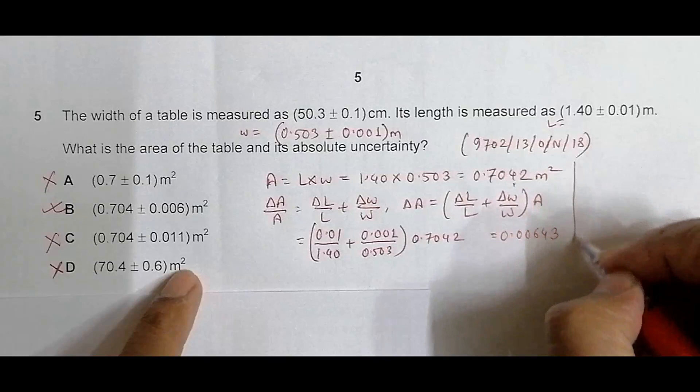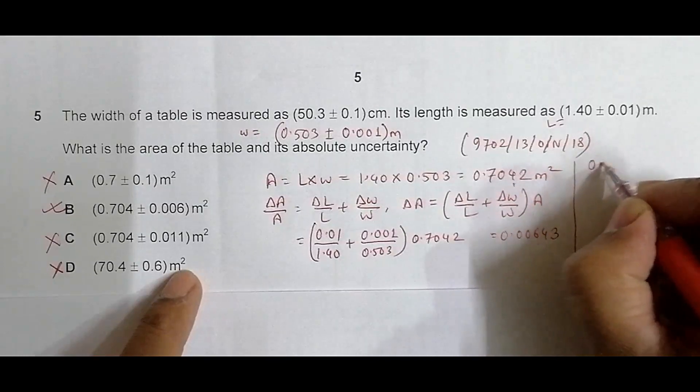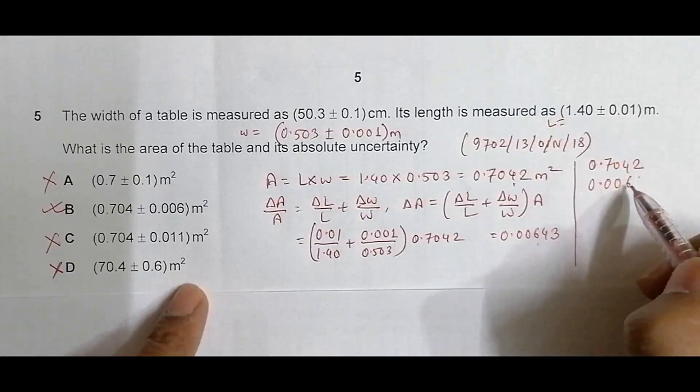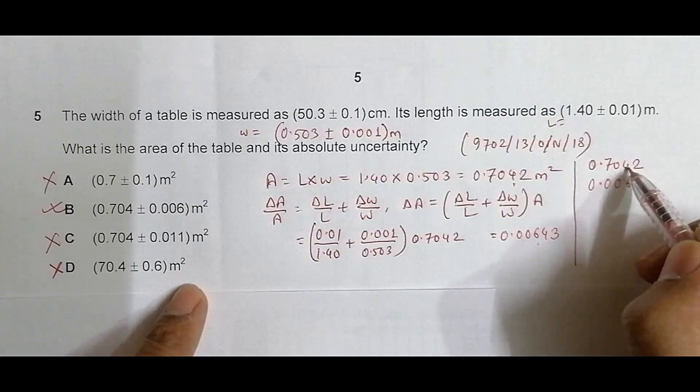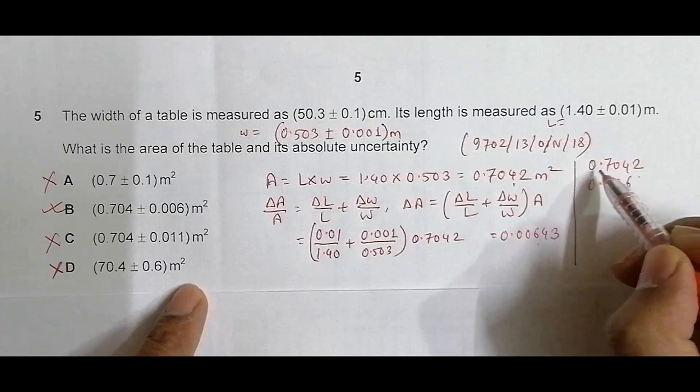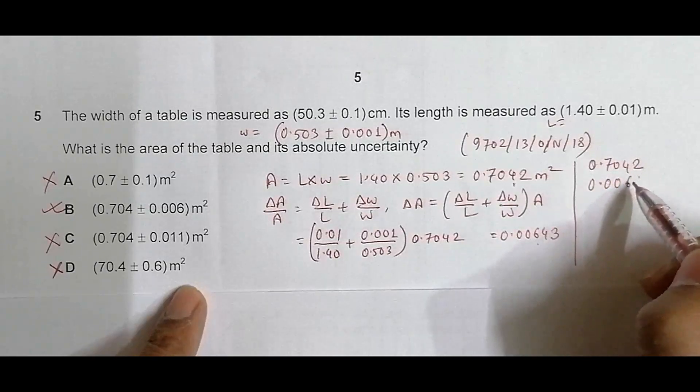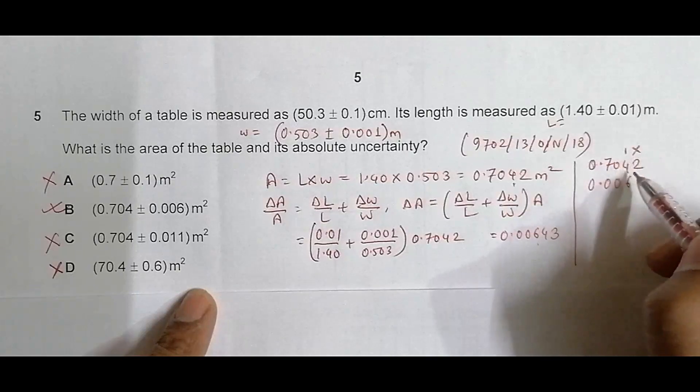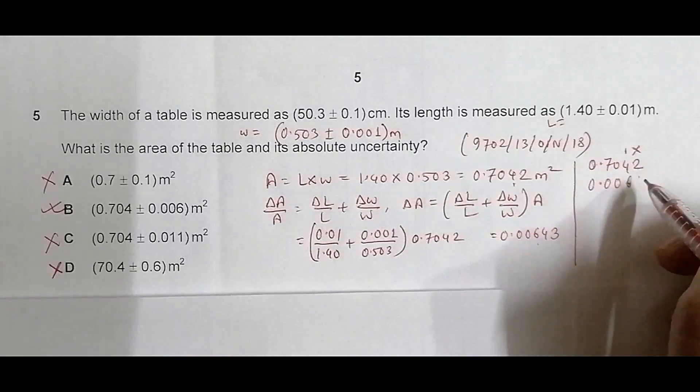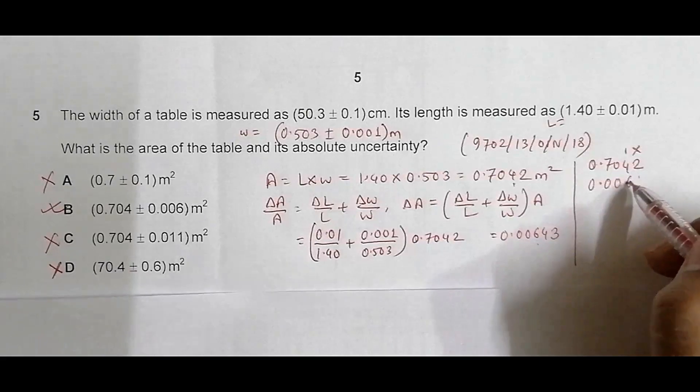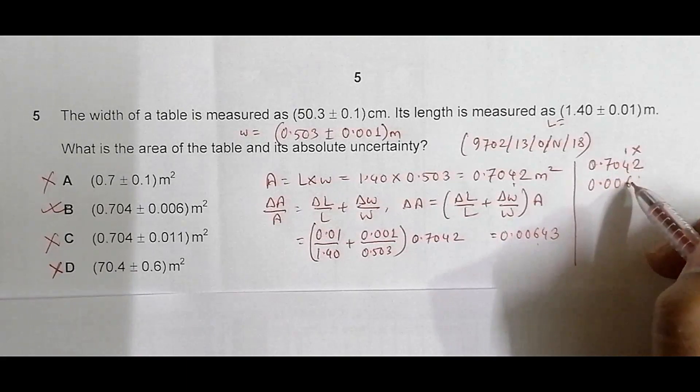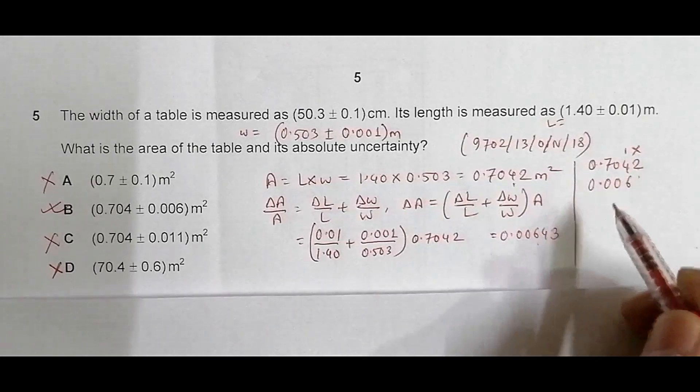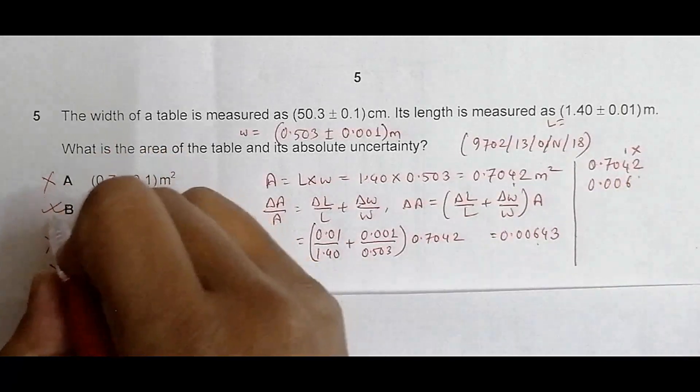Regarding the writing of 0.704, let me clarify. We have 0.7042 and uncertainty is 0.006. Since the uncertainty is 0.006, the value will be either 0.7042 plus 0.006 or minus 0.006. That's why this fourth digit we cannot write with certainty because its value has a range from 4 plus 6 or 4 minus 6 within that range only. So we can write only up to 0.704 and nothing else. Choice B should be the correct answer.